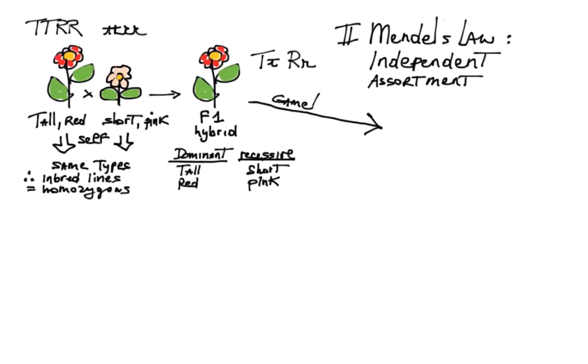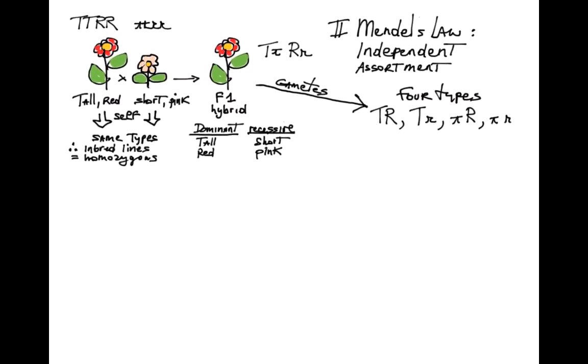This means that the F1 hybrid can make four types of gametes: big T big R, big T little r, little t big R, and little t little r.